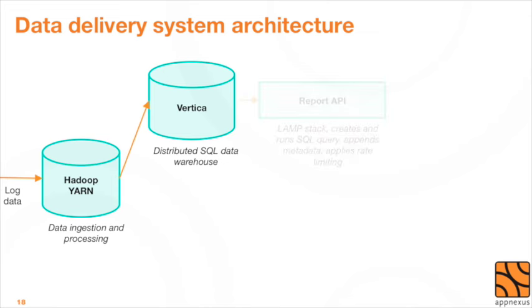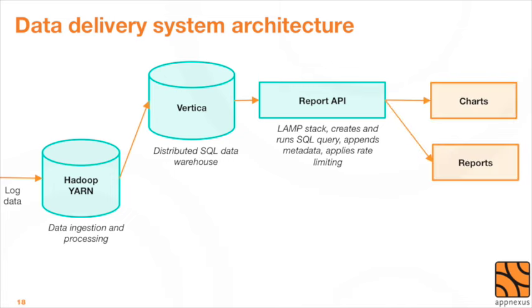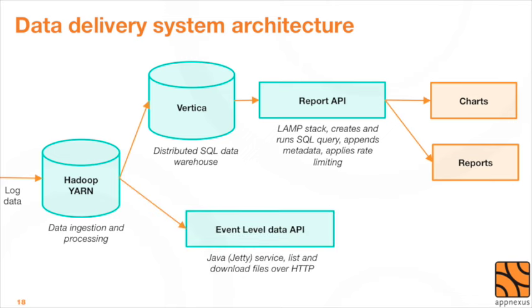On top of Vertica, we have our Report API — built on the LAMP stack. Its job is to take a report request from users, translate it into SQL that Vertica can understand, run the query, get the result, add metadata, and send the report back to the client. The Report API also handles throttling across different clients to make sure no single client can use up all our resources, ensuring fair share. For event level feeds, we don't offer much customization — they're just flat files clients can list and download via a simple Jetty-based API. We're pushing about three terabytes a day of event level feeds.